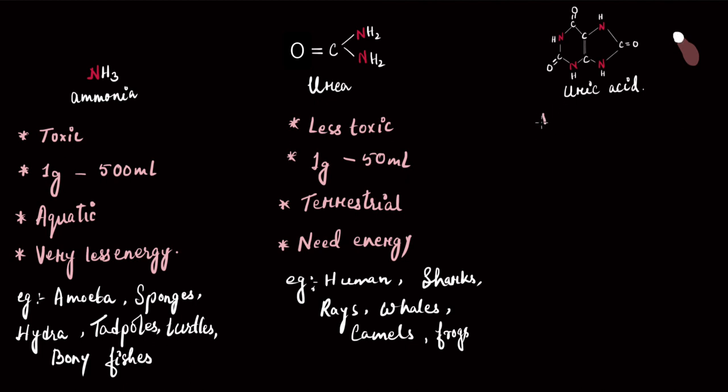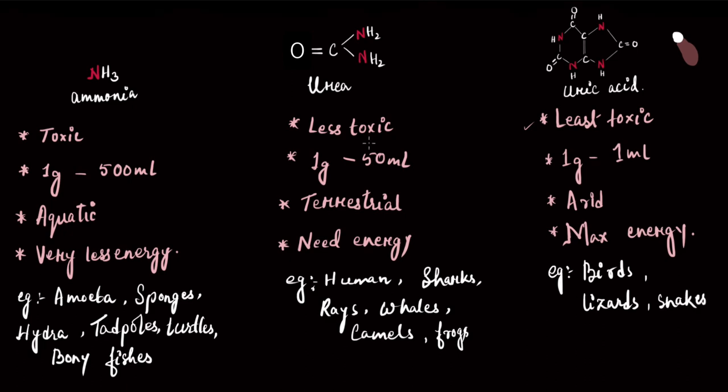And again, there are other benefits of uric acid. It is the least toxic. And excreting 1 gram requires just 1 ml of water, and that's why it is just the right fit for animals that stay in arid conditions. And you know, all good things in life come with a cost. So all these good qualities of uric acid, of being less toxic, requiring less water, will come with more cost. It needs a lot of ATP and therefore it requires the maximum amount of energy. And examples are birds, lizards, snakes, etc.